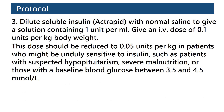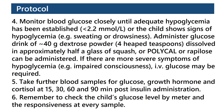Dilute soluble insulin with normal saline to give a solution containing 1 unit per ml. Give an IV dose of 0.1 units per kg body weight. This dose should be reduced to 0.05 units per kg in patients who might be unduly sensitive to insulin, such as patients with suspected hypopituitarism, severe malnutrition, or those with a baseline blood glucose between 3.5 and 4.5 mmol per liter. Monitor blood glucose closely until adequate hypoglycemia has been established or the child shows signs of hypoglycemia like sweating or drowsiness.